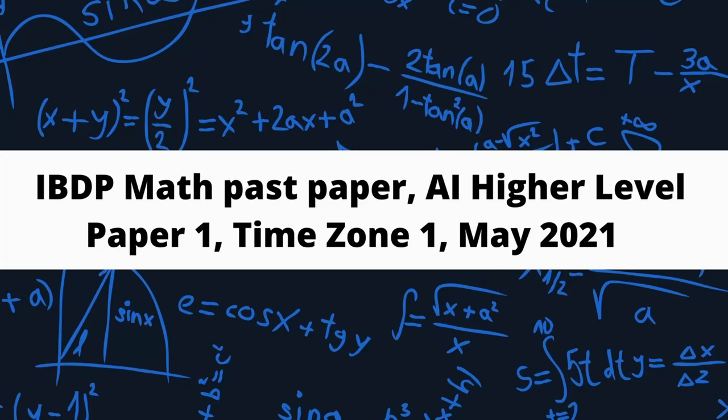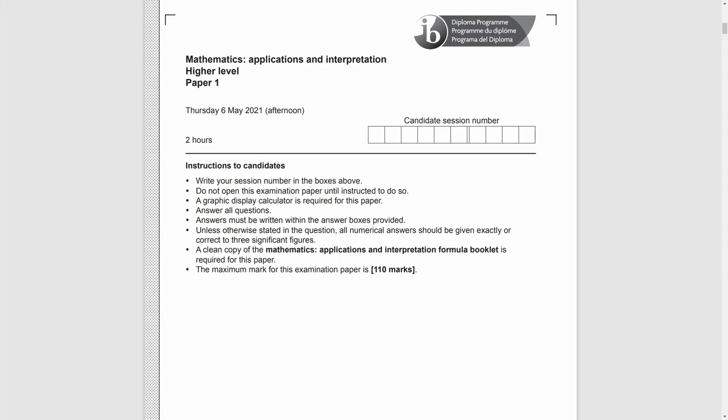In this video, we will talk about IB Math AI Higher Level Paper 1, Timeshung 1, May 2021.